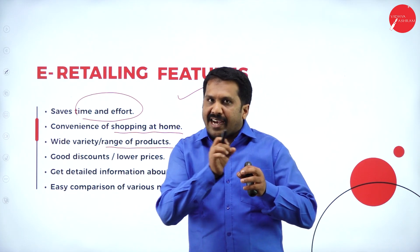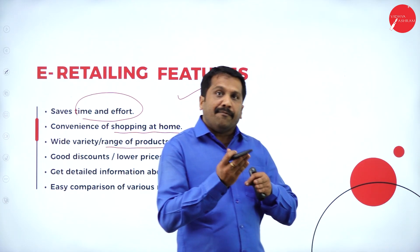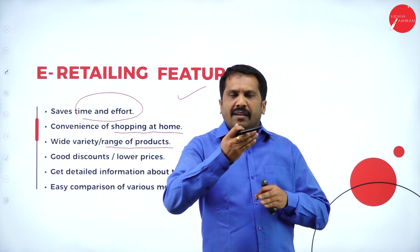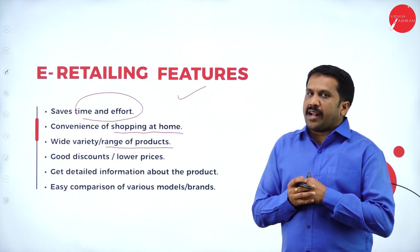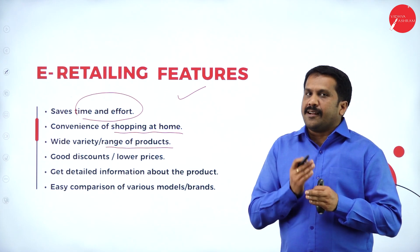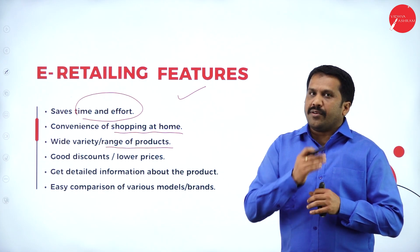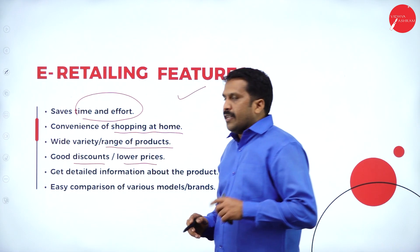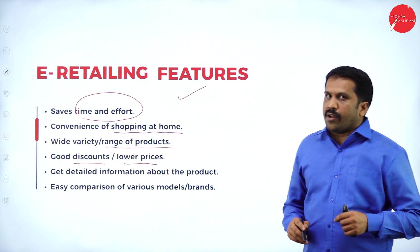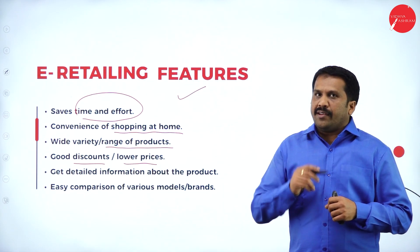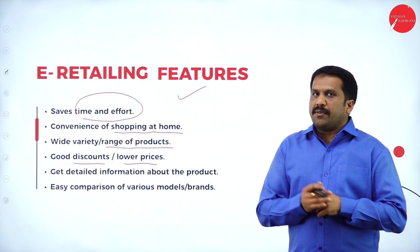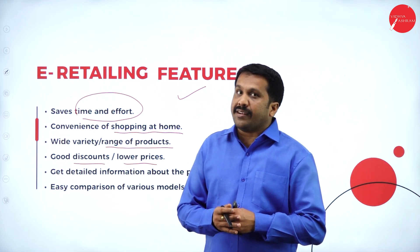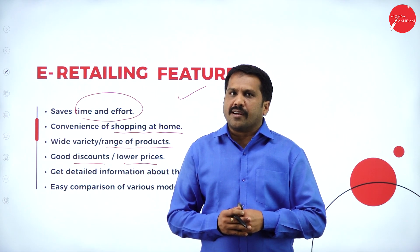Wide variety and range of products — in Samsung alone there are almost 100 kinds of varieties, like S series Pro, M50, M51, M25. Based on your budget and requirement, you can choose. Good discount and lower price — compared to offline, the same product available for 30,000 offline may be available for 26,000 to 27,000 online.